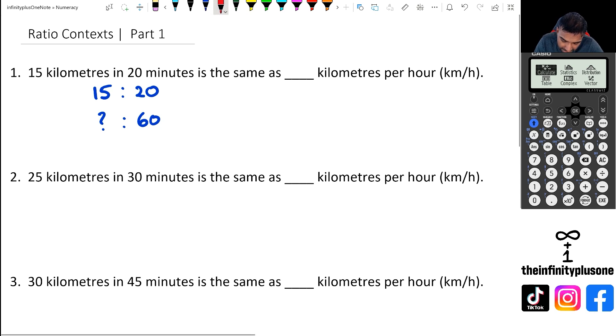So the first method, what I'm going to do is I'm actually going to figure out what number I need to multiply by 20 to get to 60. And I know that 20 times 3 is 60. And remember with ratios, whatever you multiply with one side, you've got to do it on the other side as well.